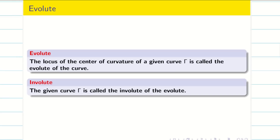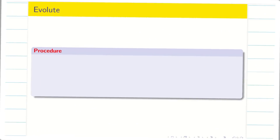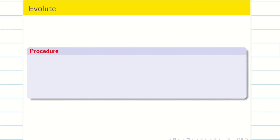Since it is a problem solving session, I am directly going to the problem. I don't go much on the theory part. How to find the Evolute for a given curve? Step 1: always you have to write the parametric form of the given curve.